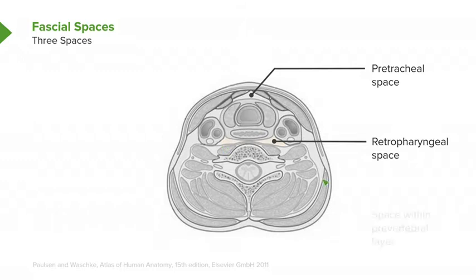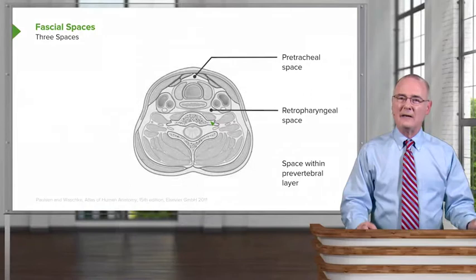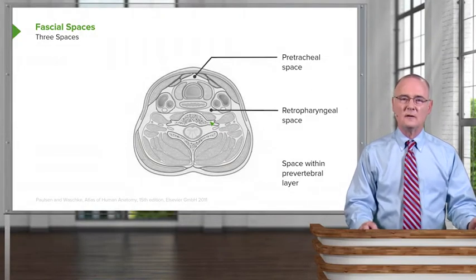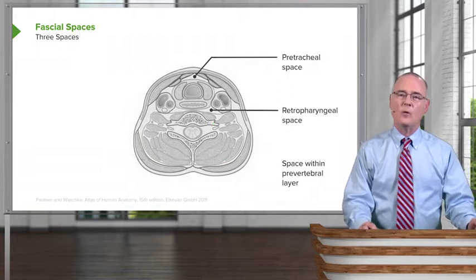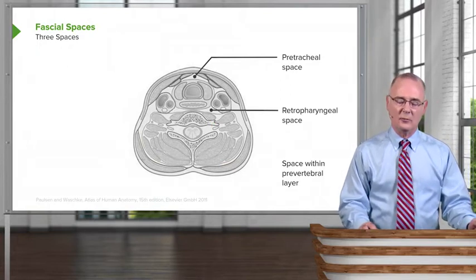The third space is the prevertebral space. That space would be the deep fascial layer that exists over the anterior portion of the body of a related vertebra and the anterior part of its transverse process. This is a bilaminar area, so there's a space between it. Unfortunately, it is not well illustrated in this particular image, but it is one to keep in mind.